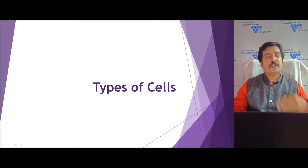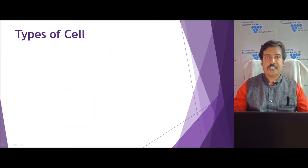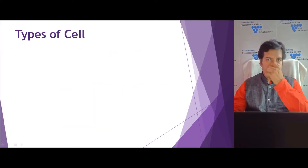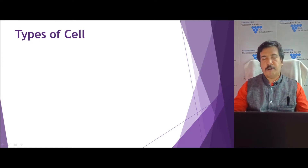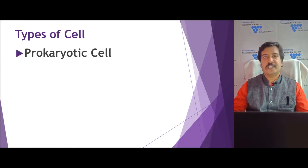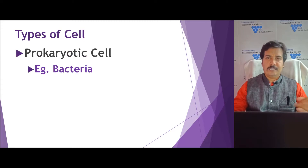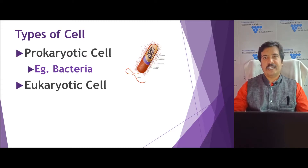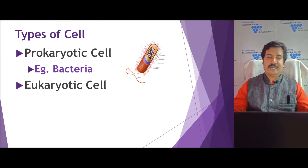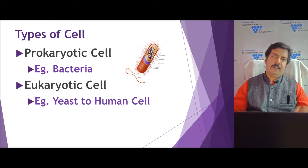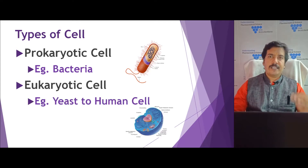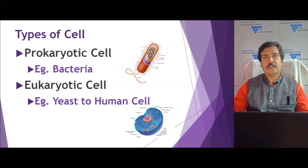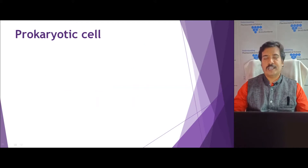Looking at the different types of cells, we can broadly classify them into two major types. One is called a prokaryotic cell — a simple example is bacteria — and the second is a eukaryotic cell. A single-celled eukaryotic example is yeast, up to a multicellular organism like a human cell.